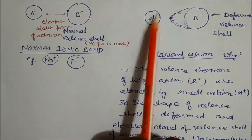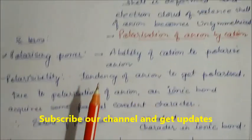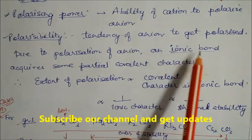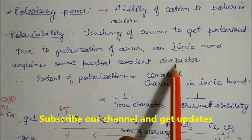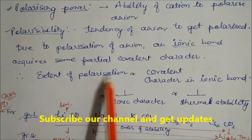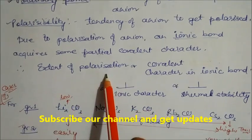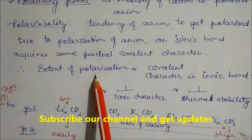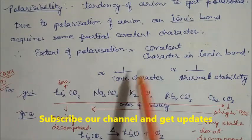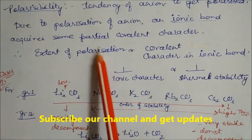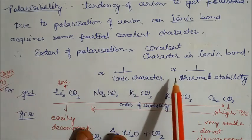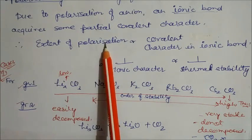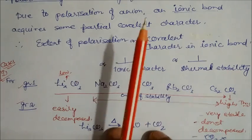Due to polarization of the anion, the ionic bond acquires some partial covalent character. Greater polarization leads to higher covalent character and lower ionic character — these are inversely proportional. Simultaneously, the thermal stability of the compound also decreases: more polarized or more covalent means less thermal stability.